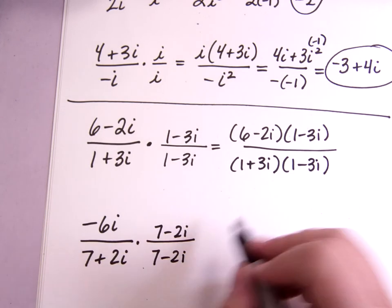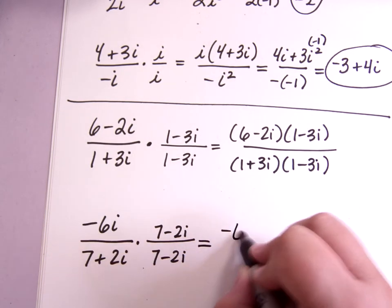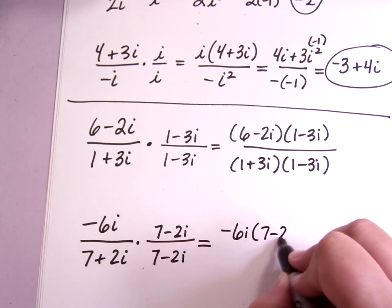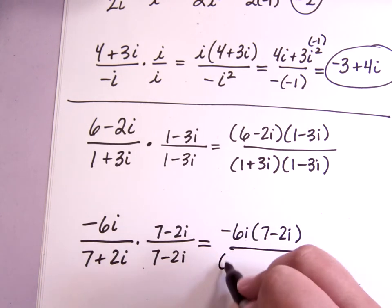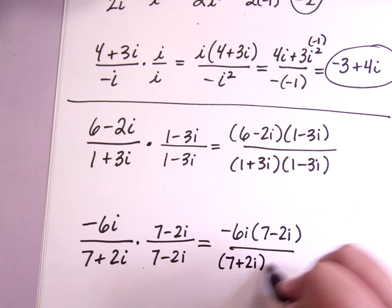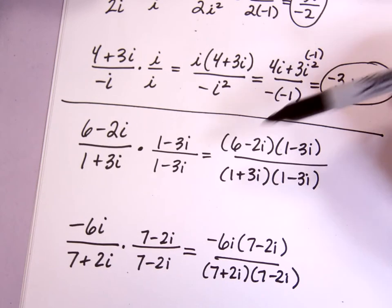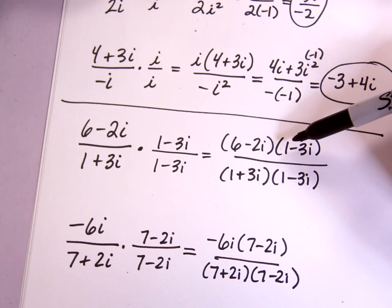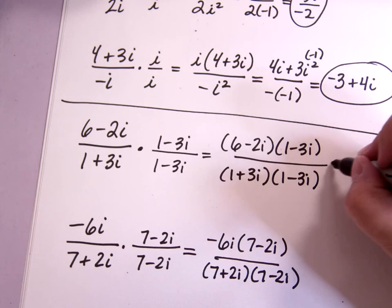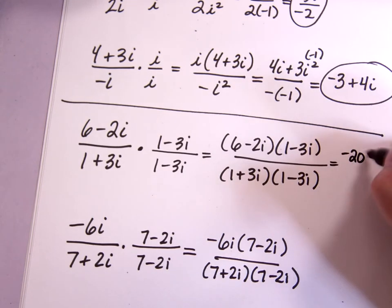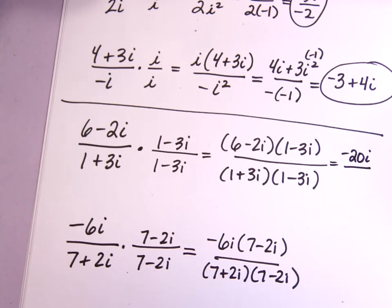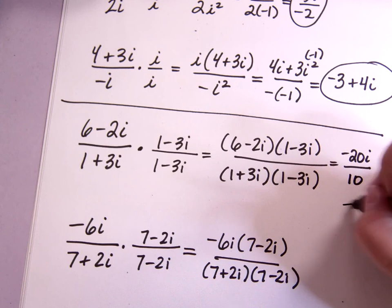Same thing, well, down here it's actually distributive property on top. Let's see, this one's going to be negative 20i on top. And on the bottom, we have 10. That's going to work out kind of nicely and give me 2i.